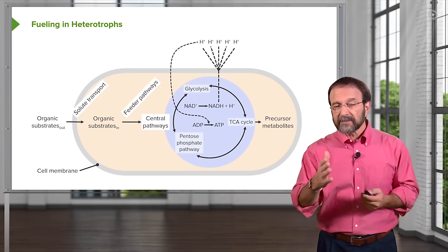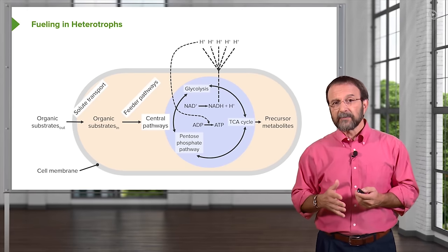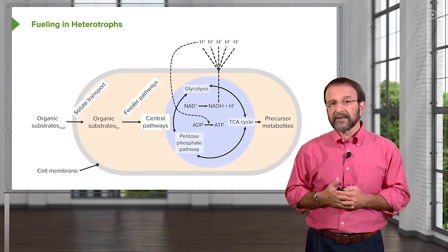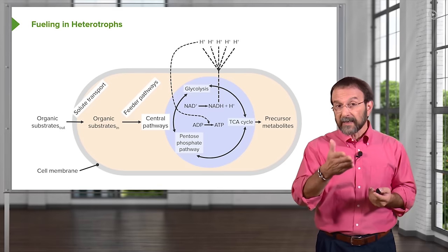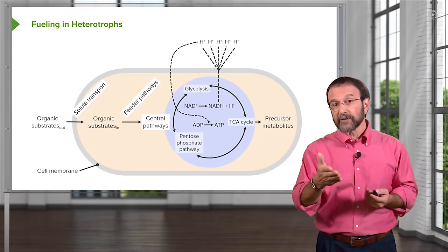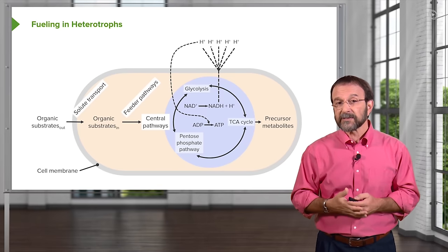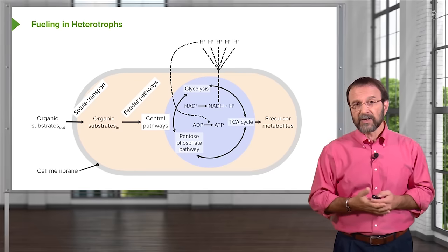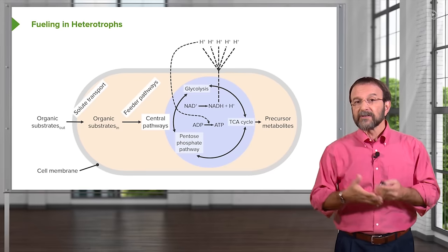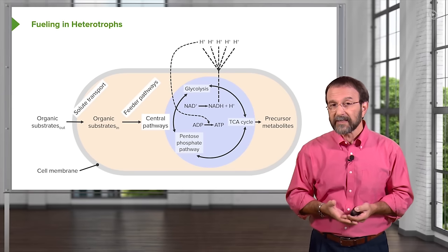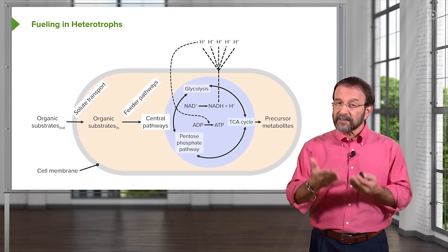They get put into the central metabolic pathways, which are shown in color here, and these include glycolysis, the TCA or the Krebs cycle, and the pentose phosphate pathway. These use electron transport to generate energy in the form of NADH or ATP and precursor metabolites.